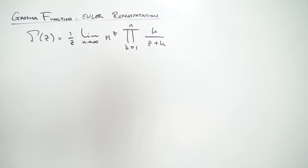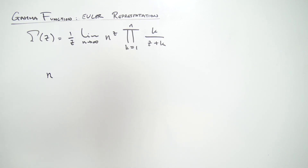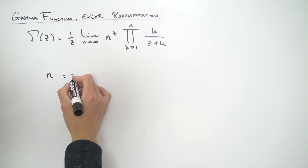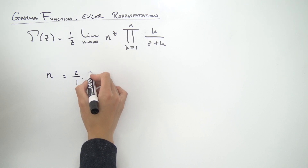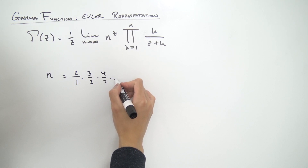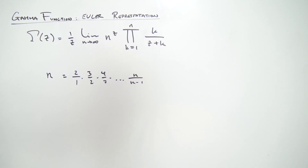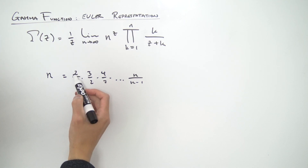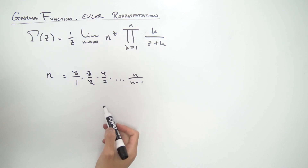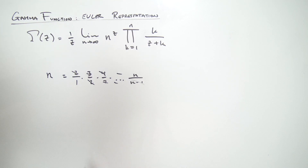Instead of exponentiating it and turning into base e like the Weierstrass representation, let's just take a look at n by itself. Notice that n is exactly (2/1) × (3/2) × (4/3) × ··· × (n/(n−1)). You can see why this is true because 2 and 2 cancel, 3 over 3 cancels, 4 and the next cancel, and so on, leaving just n/1 which is exactly n.